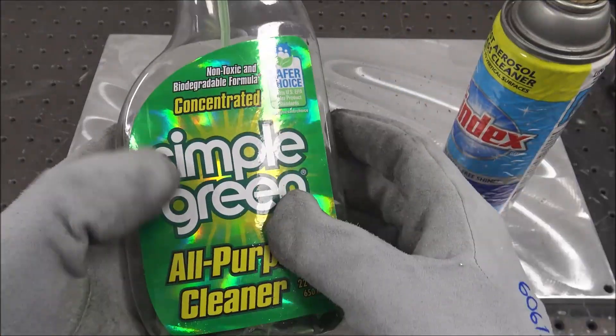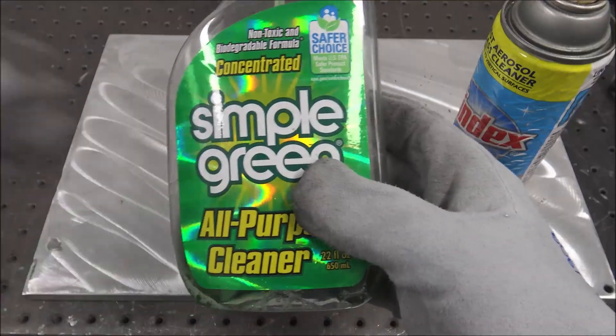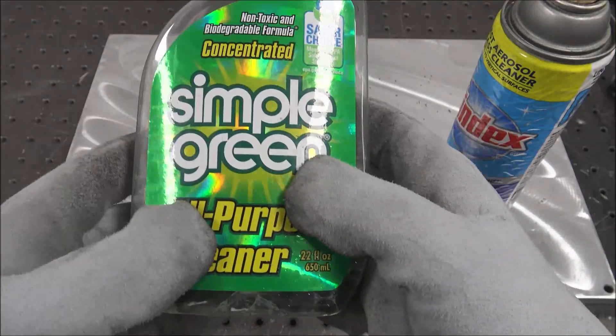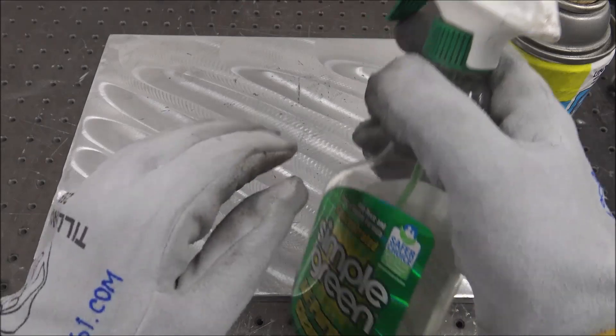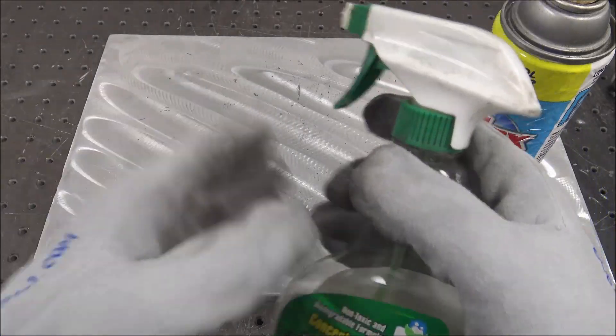If you have any light stains in your parts from coolant or water or whatever, concentrated Simple Green has a light etching characteristic to it, so it'll clean some of that off.